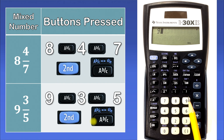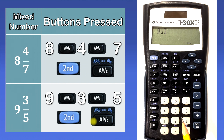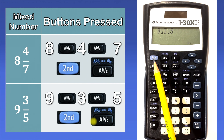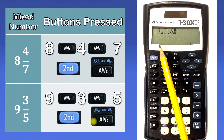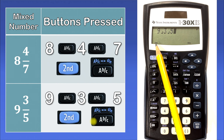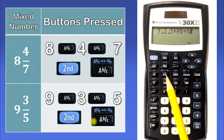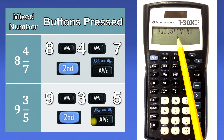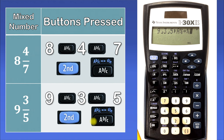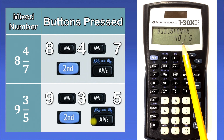So let's type that in the calculator now. We'll hit 9, ABC, 3, ABC, 5, 2nd. The calculator is showing you that it understands you're looking for a second function — in other words, something written in blue. Then we'll hit the ABC button again. The calculator is going to take 9 and 3 over 5 and turn it from a mixed number into an improper fraction. And when we hit enter, it'll give us the improper fraction 48 over 5.